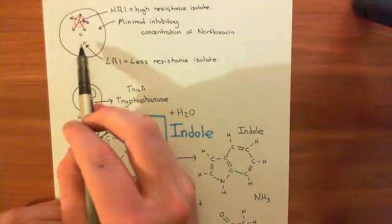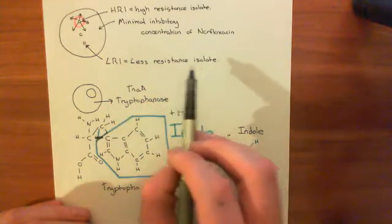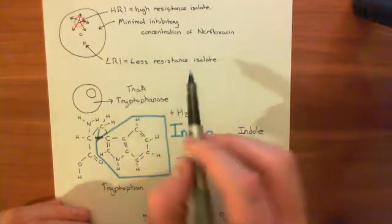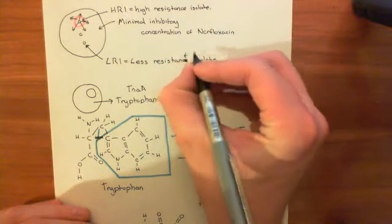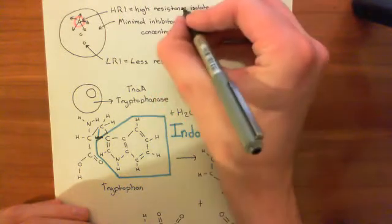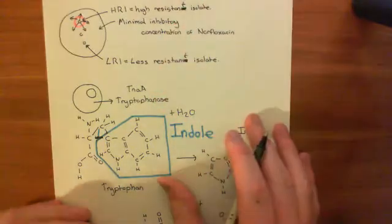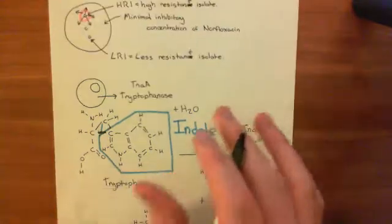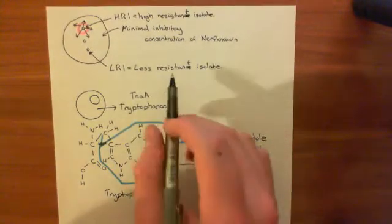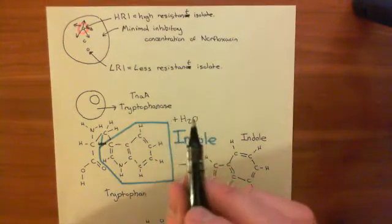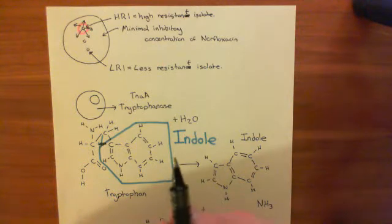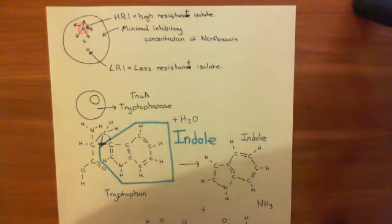And the indole goes to the other bacteria on this plate, which are not resistant to norfloxacin. So, if I took this less-resistant isolate and put it on an agar plate on its own with the norfloxacin, then its protein synthesis would be completely inhibited.